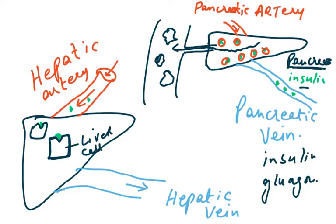Glucagon is produced when your blood glucose levels fall. Insulin is produced when your blood glucose level rises — like when you've had bread, rice, or something sweet like chocolate cake. That triggers digestion and absorption, blood glucose rises, it is detected in the pancreas, and the pancreas releases insulin.